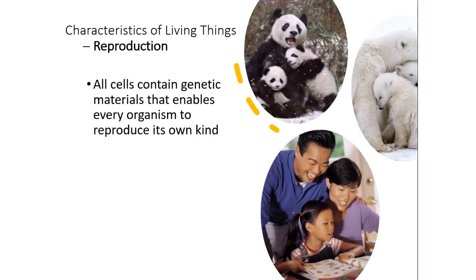Then we have the ability to reproduce. Reproduction is another characteristic of living things. All cells contain genetic material in the form of DNA, and that enables every organism to produce its own kind. Pandas make baby pandas, polar bears make baby polar bears, and humans make baby humans.